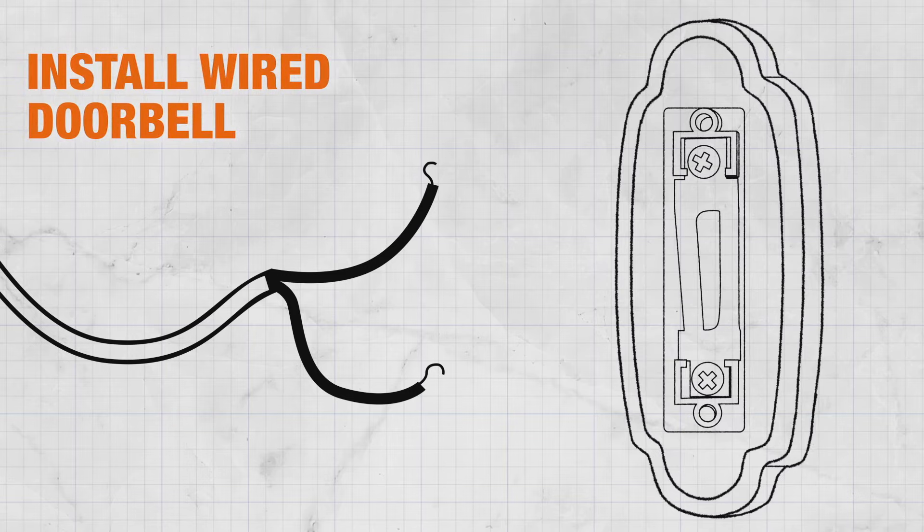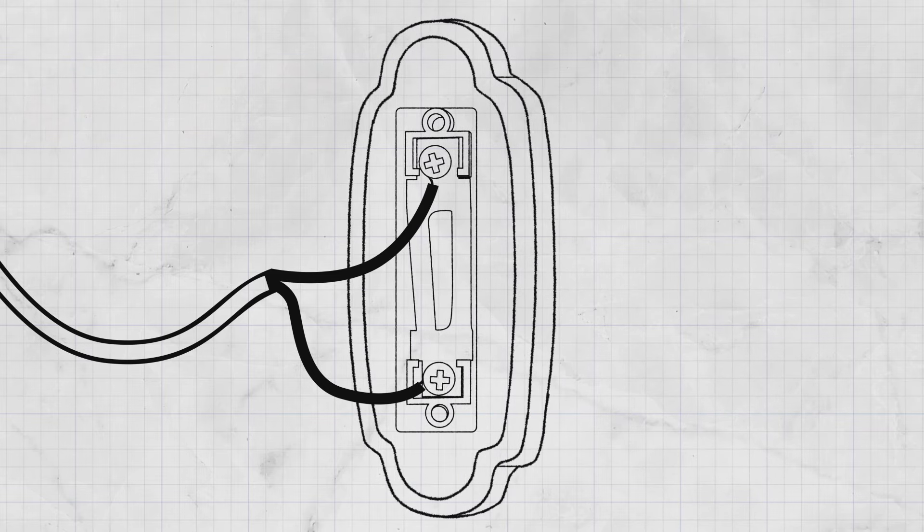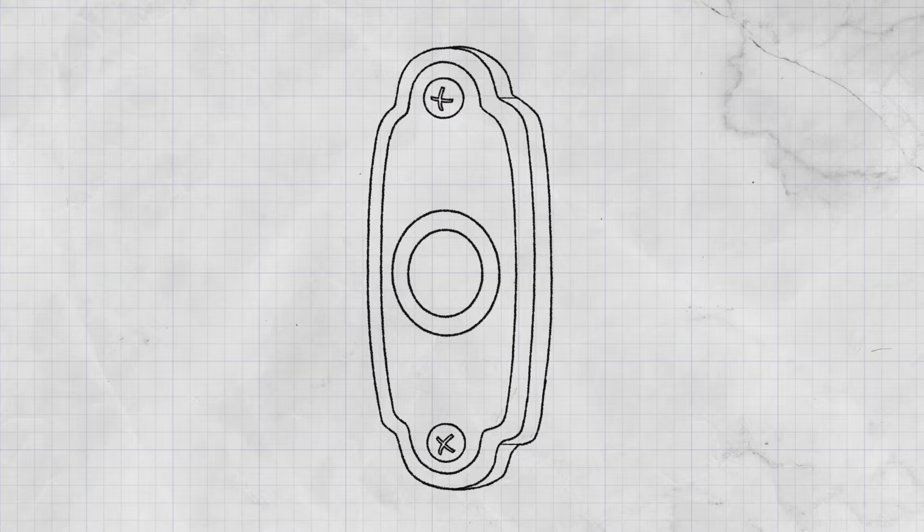To install the doorbell, first lightly unscrew the two screws on the back of the doorbell button. Hook each wire around a screw and tighten. Mount the doorbell by screwing it into place.